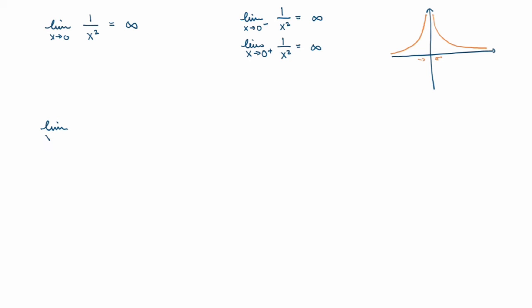Let's look at the limit as x goes to 3 from the left of the function 2x over (x−3). As x goes to 3, the numerator goes to 6, which is finite. But for the denominator, taking x just a little smaller than 3, x minus 3 is a very small but negative number. So we get 6 over a very small negative number, which becomes very large but negative — so the left-sided limit is minus infinity.